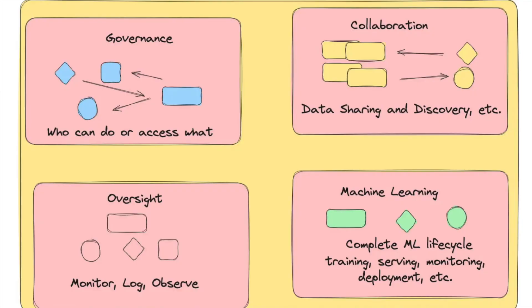Unity Catalog also covers collaboration — Delta Sharing and discovery features are part of it. And of course there's monitoring and observability: Unity Catalog tracks and monitors everything, and you can observe what's happening across all the objects stored within it.